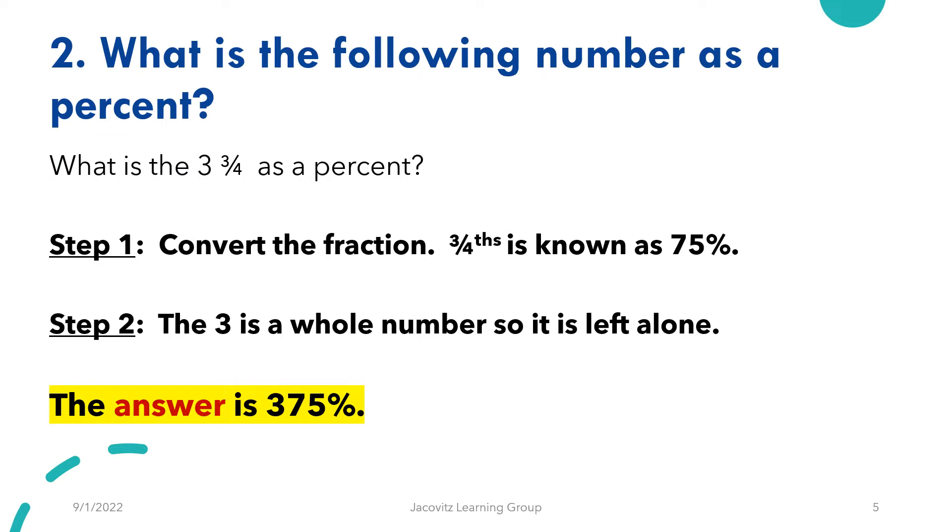Two ways to do what is 3¾ as a percent. You already know that ¾ is 75%. You can do it that way and just keep it here. The problem is you have to remember that you don't go 3.75 because it's asking you as a percent. That gets hard. So why don't we just do some logic here?